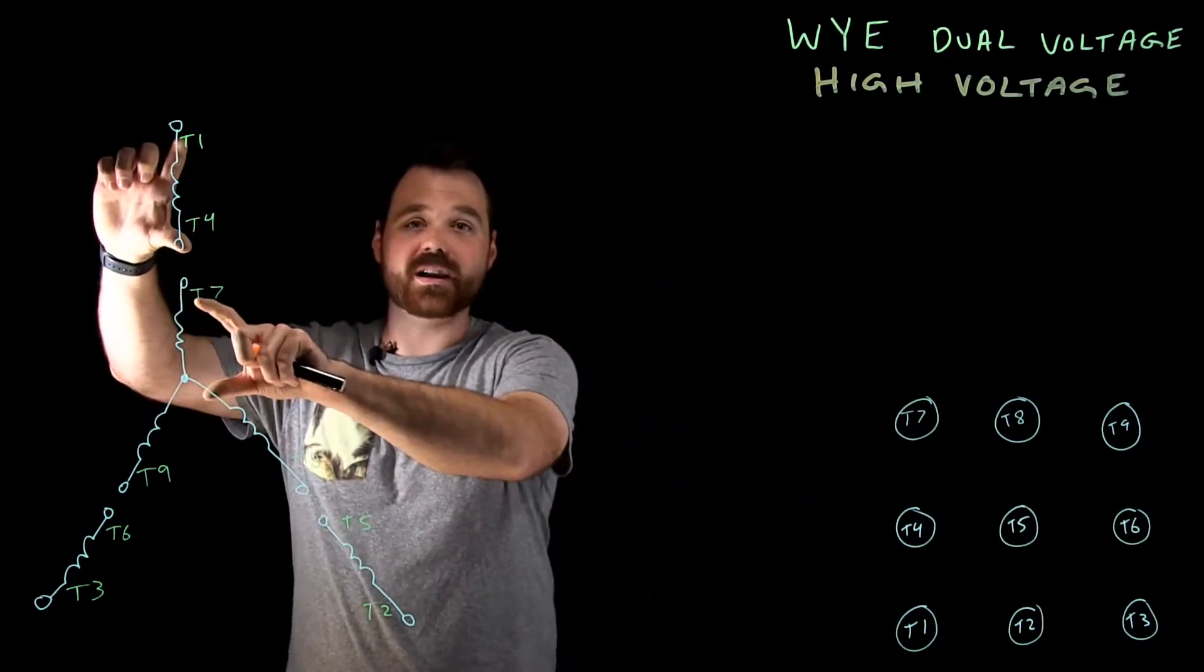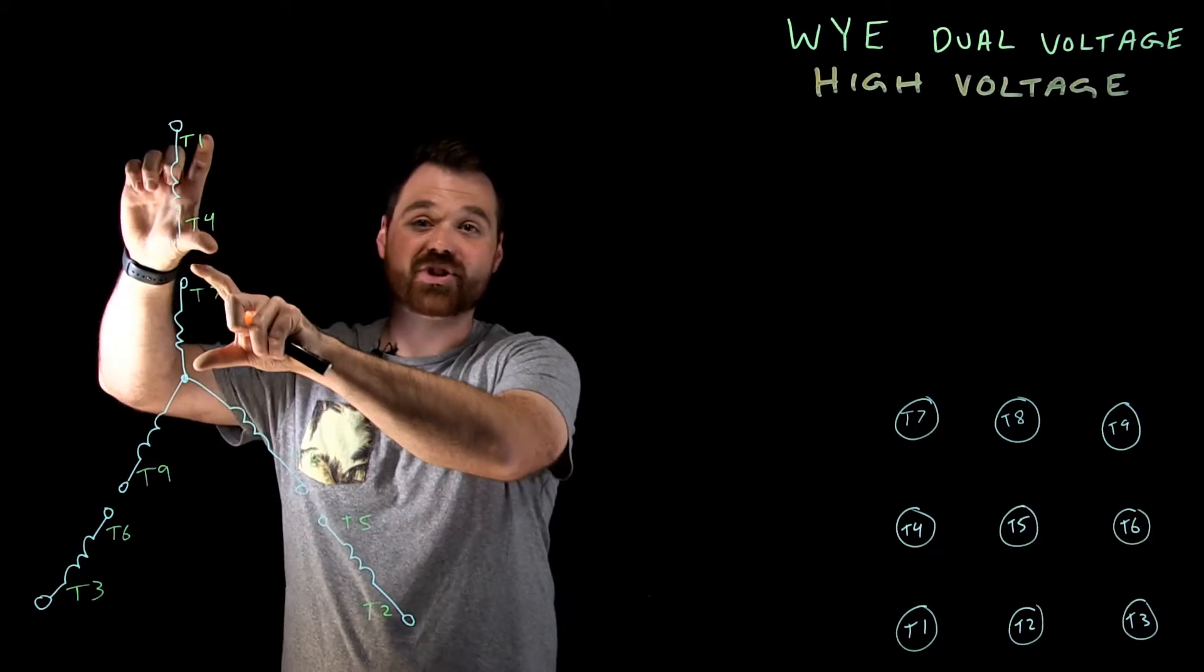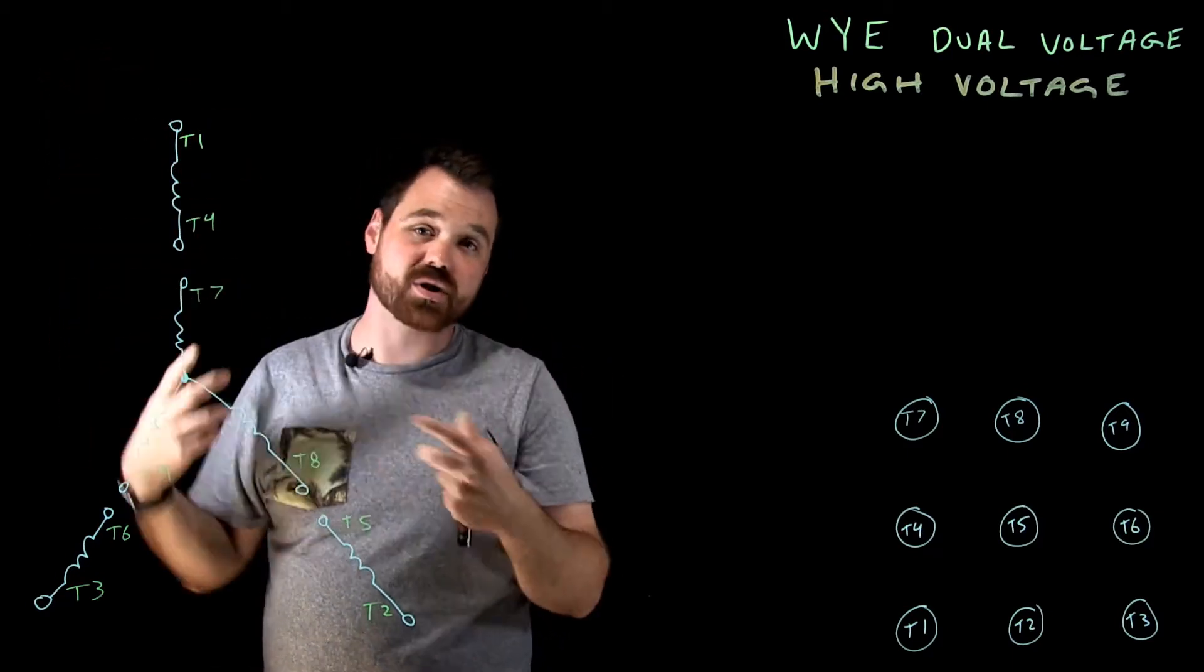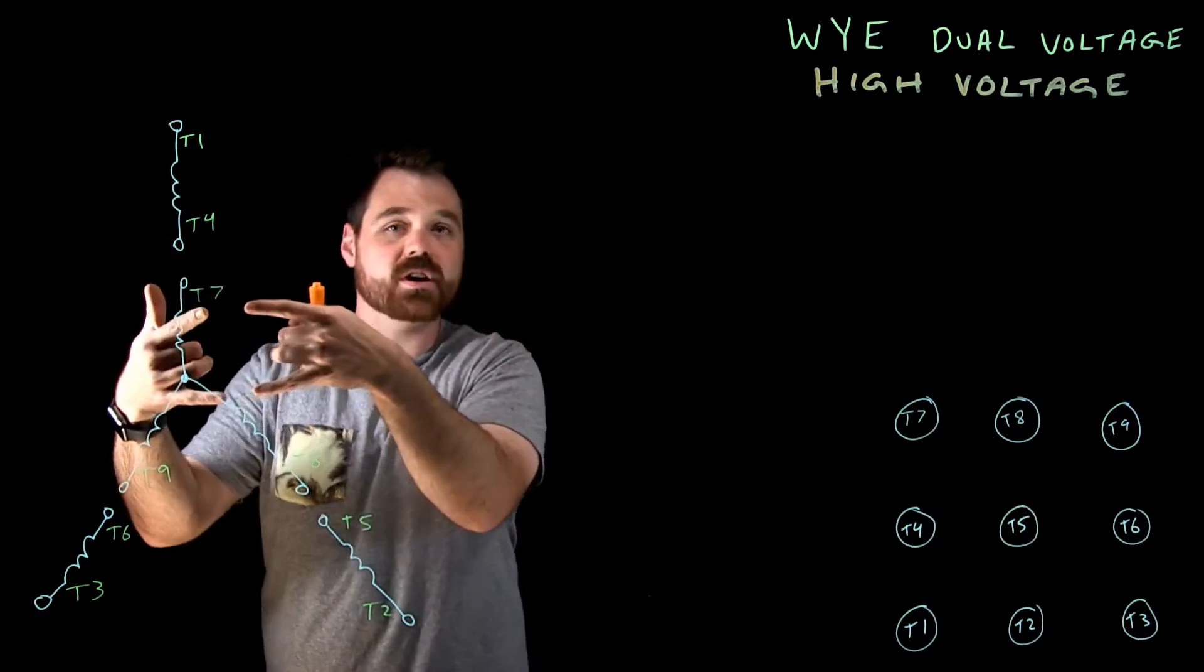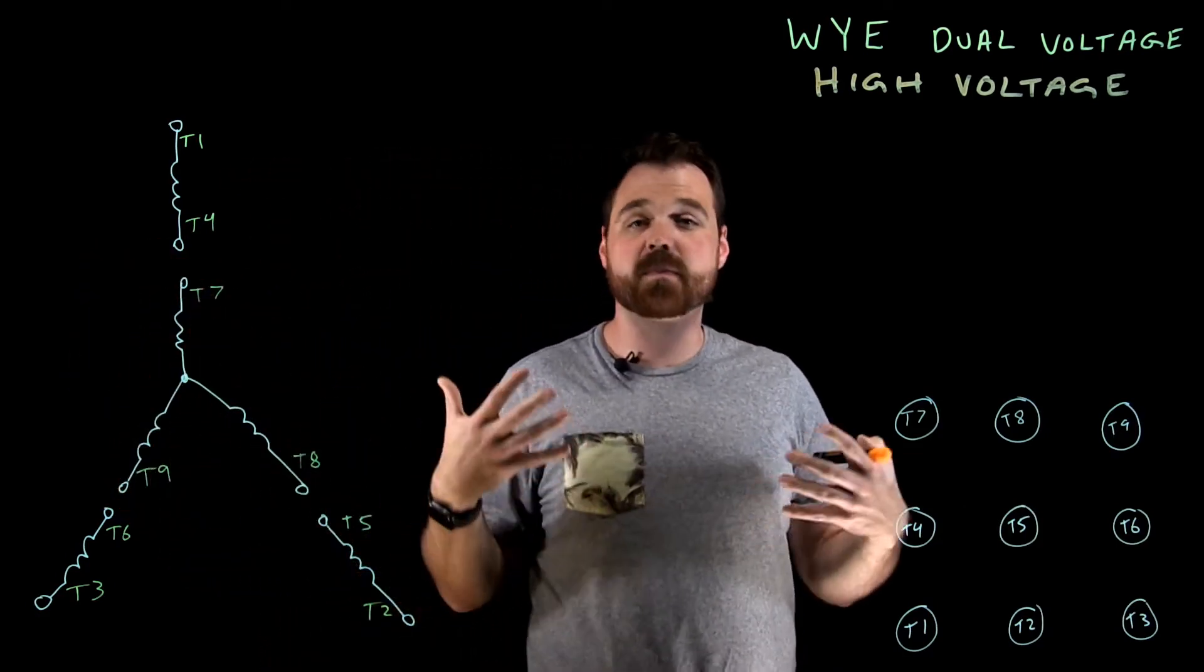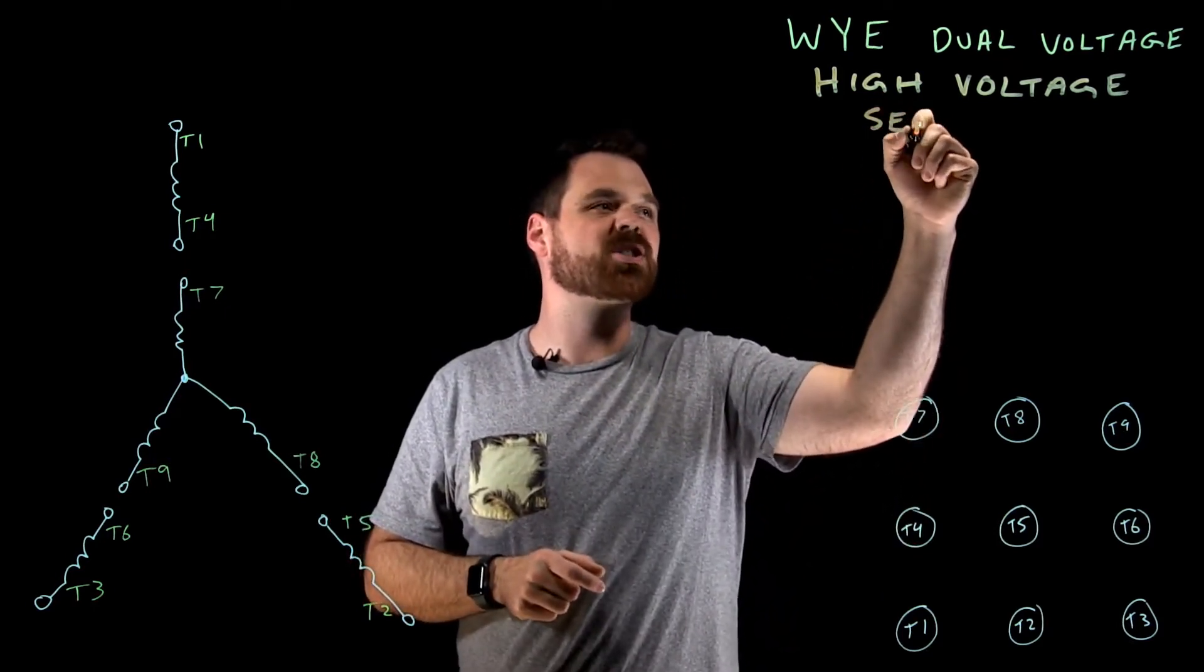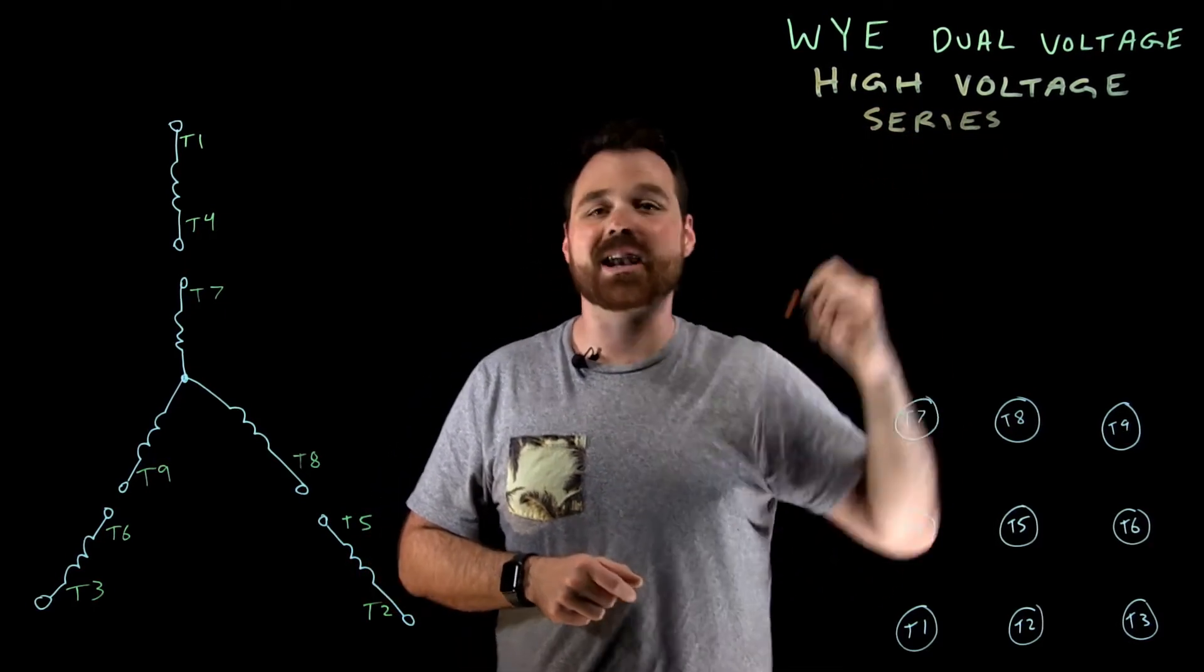If I put these two windings, which are both rated for 240 in series, then I can apply 480 volts across it. If I put them in parallel with each other, that's going to only allow me to put the lower voltage. So in this case, we're a high voltage connection. So we are talking about a series connection.